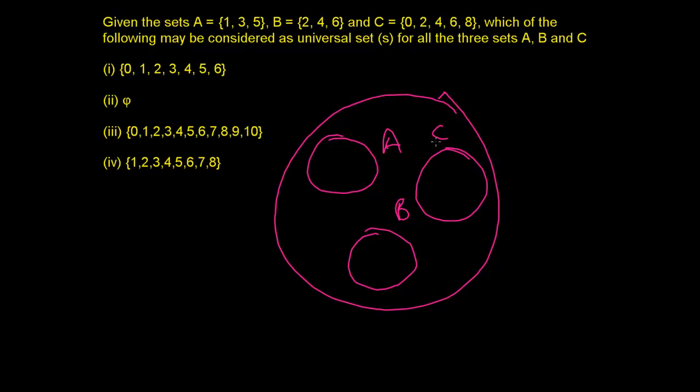whatever the set or even bigger than that, it may be possible. But minimum, all the elements of A should be there, all the elements of B should be there, and all the elements of C should be there in the universal set.